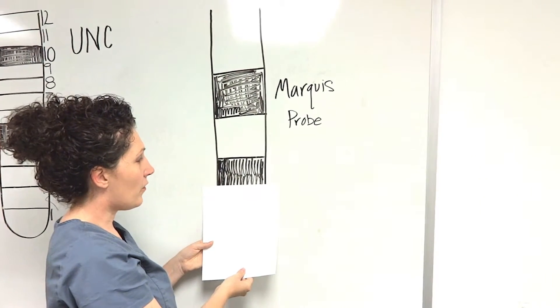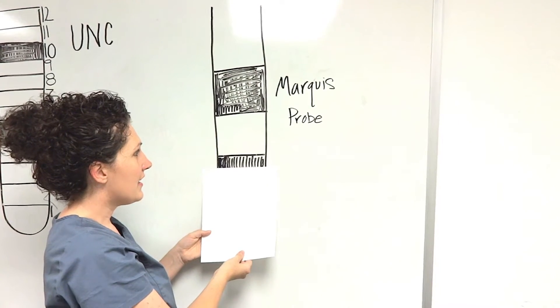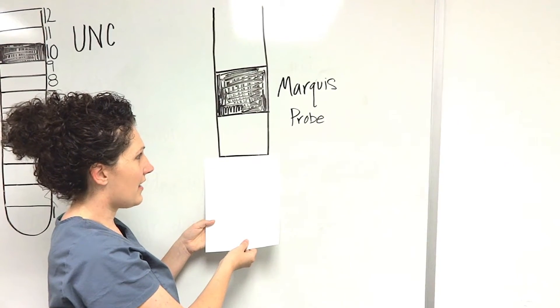Once you hit the black line, you're in a 4. Halfway through the black line is the 5 area, and then 6 until the end of the black line.